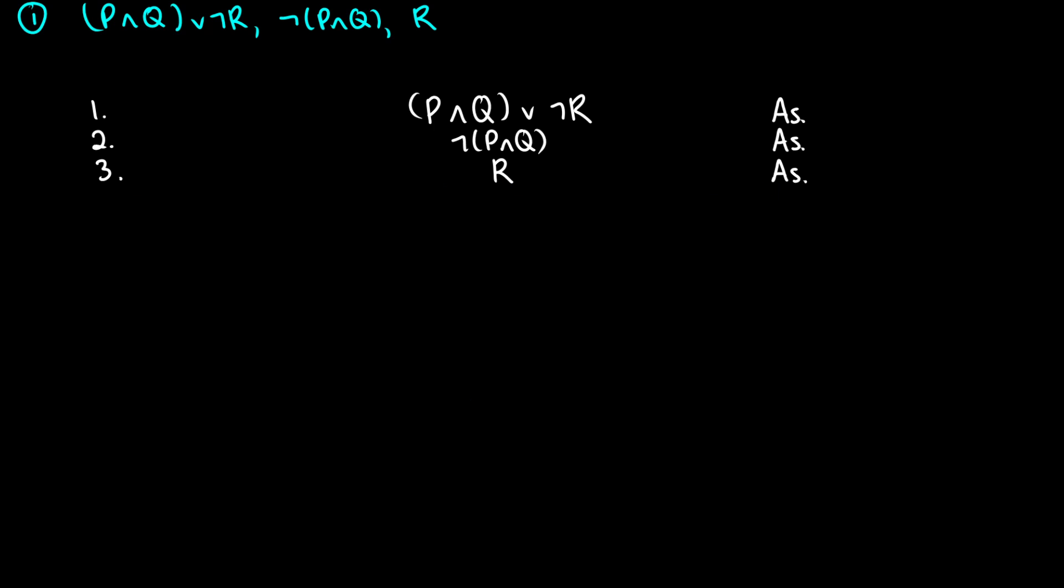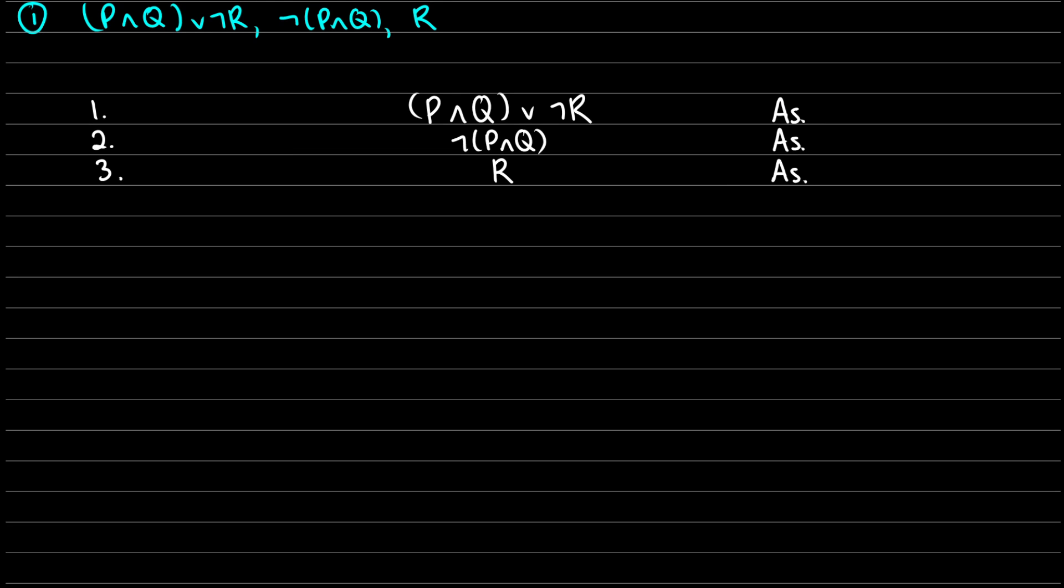Anyways, solutions. We need to show that these three well-formed formulas are inconsistent, which means we need to draw a truth tree for all of the branches close. Now because these truth trees might get big, I'm going to put on some lines so that way I can make sure everything is neat and tidy.